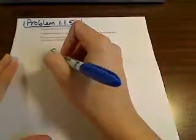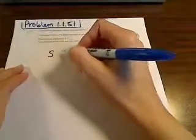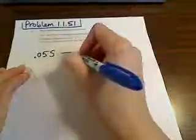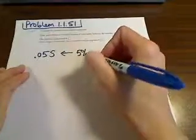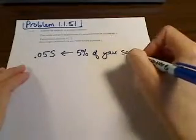So what they're saying basically is you're starting with a salary of S, and then you're trying to increase it 5%. So you have to think about, first of all, how would you represent 5% of your salary? If your salary is S, then 5% of your salary would actually be represented by 0.05S. So this right here is representing 5% of your salary.